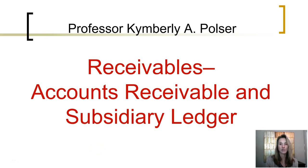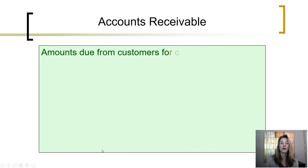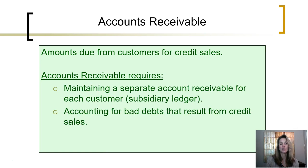This episode is going to discuss accounts receivable and the use of a subsidiary ledger. Accounts receivable represent amounts that are due to the company from customers for sales that were originally made on credit. Accounts receivable requires not only keeping track of total receivables in the general ledger, but we also must maintain a separate account receivable for each customer, and this is done in what is called a side ledger, more formally known as a subsidiary ledger.